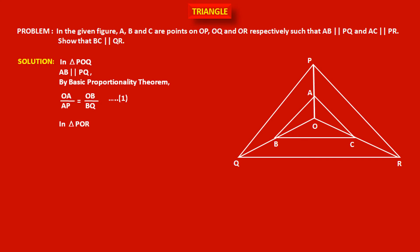Now consider triangle POR. In this triangle, segment AC is parallel to PR, where PR is a side of the triangle. Also, AC intersects the triangle in its two sides OP and OR. So by the Basic Proportionality Theorem, this segment divides the other two sides in the same ratio. So we can write: OA upon AP is equal to OC upon CR. Let us consider this as statement number two.